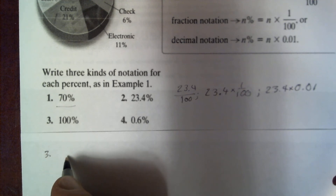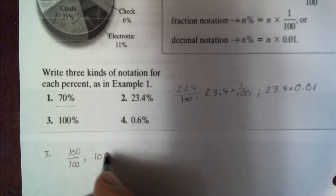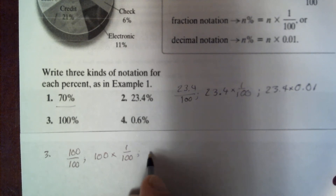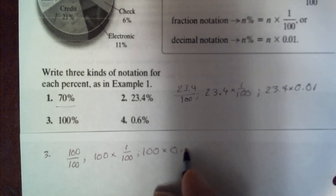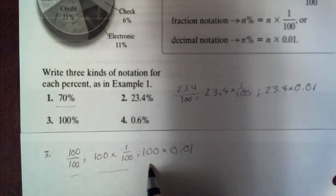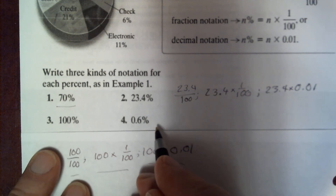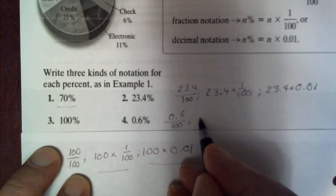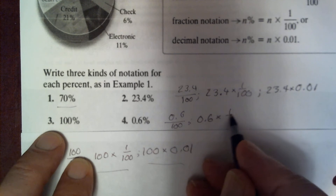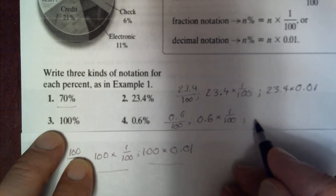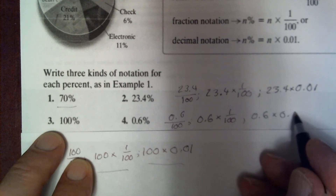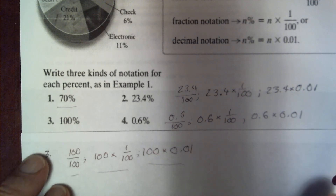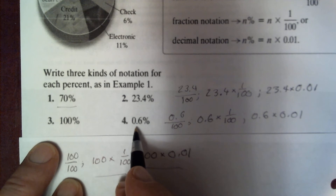For 100 percent: 100/100, or 100 times 1/100, or 100 times 0.01 — all equivalent to 100 percent. For 0.6 percent: 0.6/100, or 0.6 times 1/100, or 0.6 times 0.01 — each expression is equivalent to 0.6 percent.